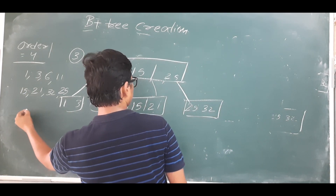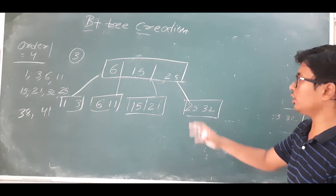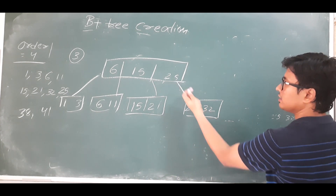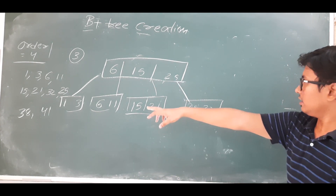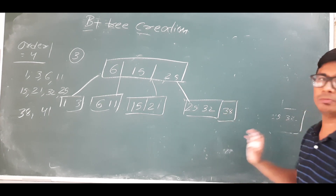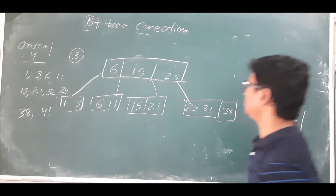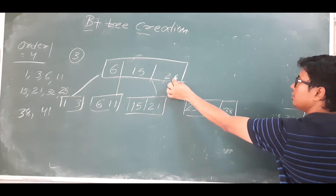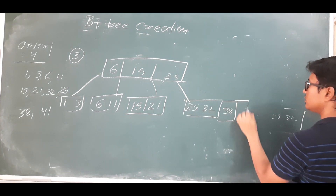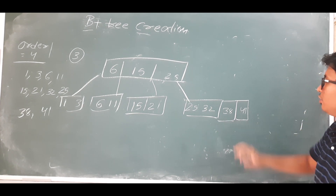I want to insert 38. Where will 38 come? 38 is greater than 25 and greater than 32, so 38 will come here — no overflow problem. Now I want to insert 41. 41 is greater than 25 and greater than 38, so 41 will come here — this creates an overflow in the leaf node.